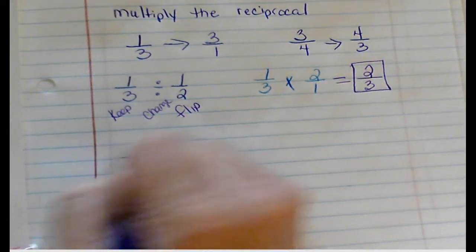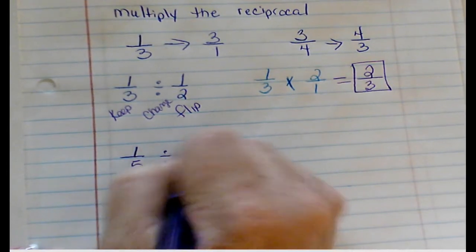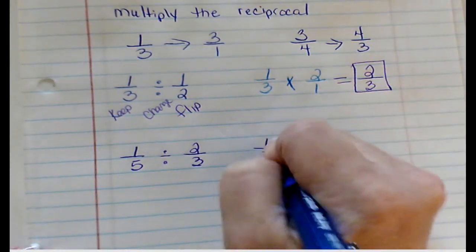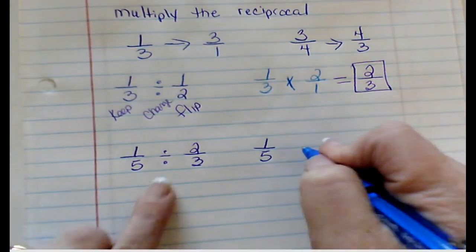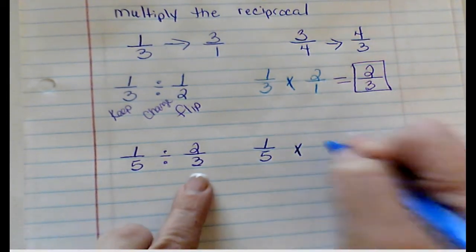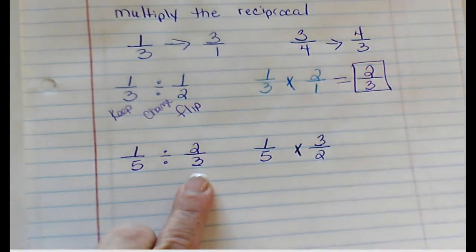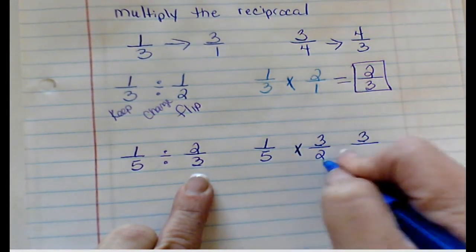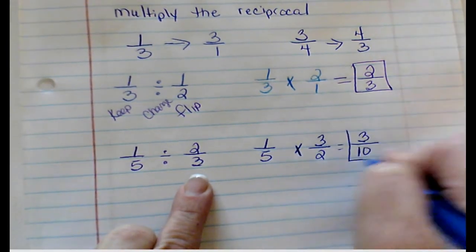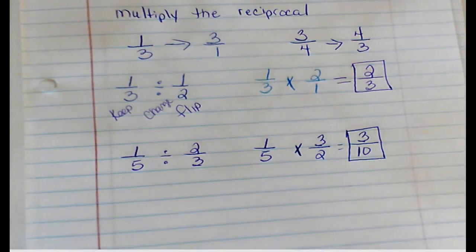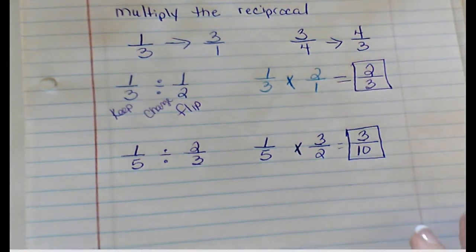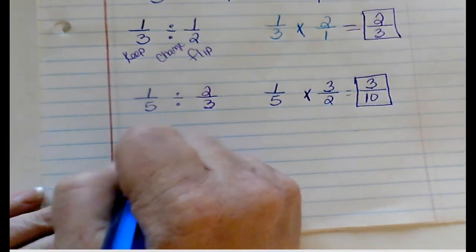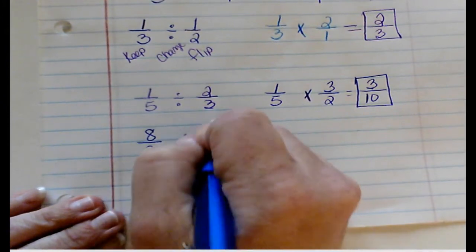1/5 divided by 2/3. I'm going to keep 1/5, change to multiplication, and flip to 3 over 2. 1 times 3 is 3, 5 times 2 is 10, so my answer is 3/10.